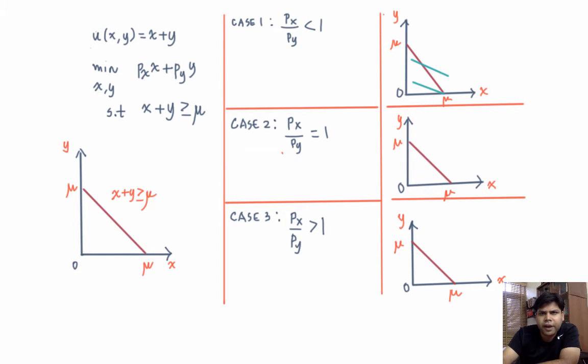So let's plot it. So this graph tells us that the individual will consume mu units of x and 0 units of y. So the solution is the Hicksian demand for x in this case is mu units of x and the Hicksian demand for y is 0 units of y.